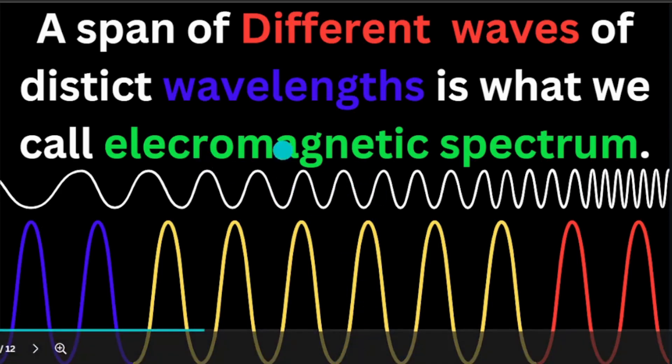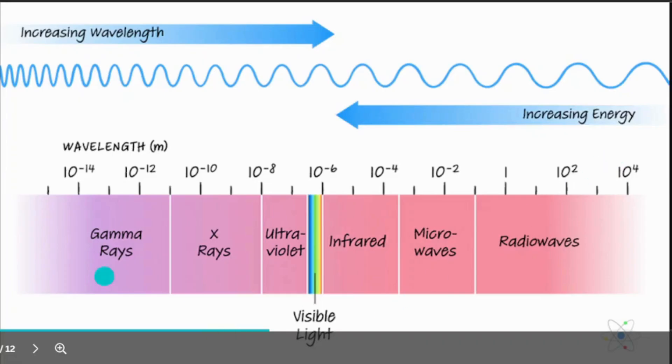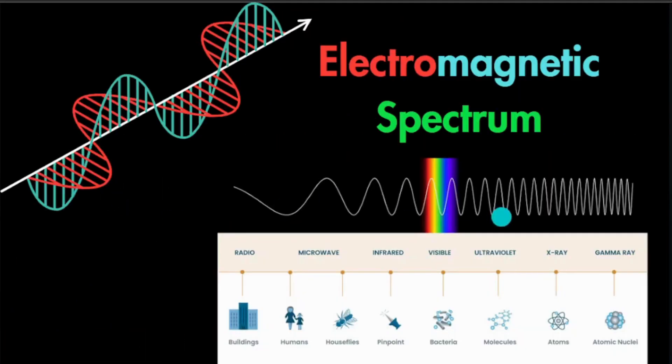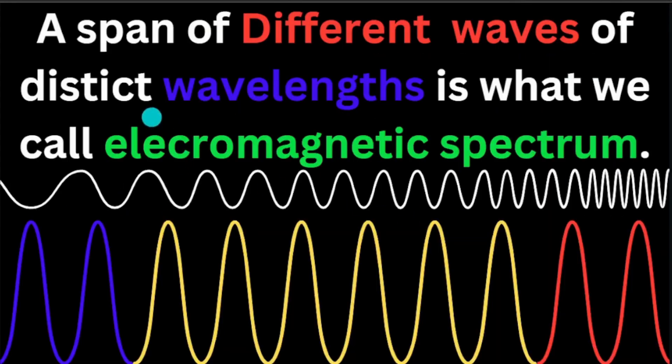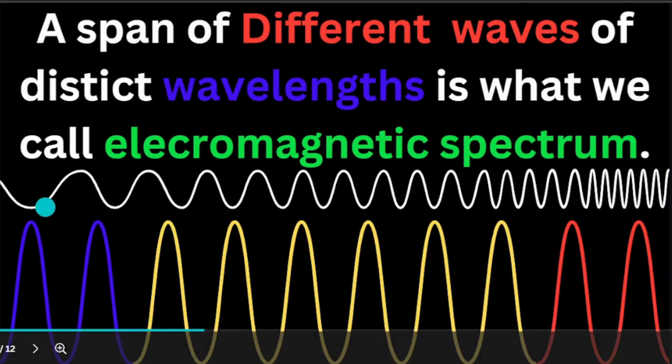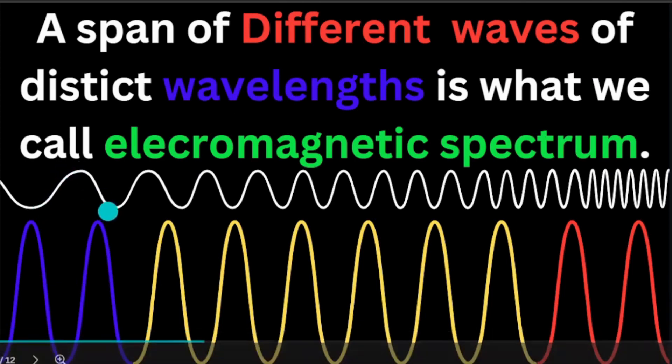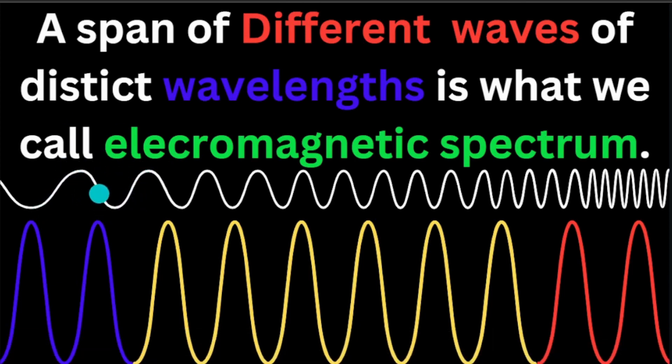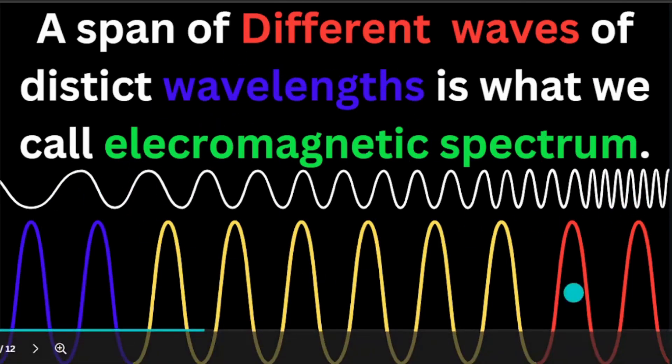A span of different waves of distinct wavelengths is what we call electromagnetic spectrum. Let me make you understand. There are different waves with different wavelengths. What is wavelength? Here is a hill, here is a valley. The combination of this hill and valley is what we call a wavelength. So different waves of different wavelengths is called an electromagnetic spectrum, which is shown in the chart.